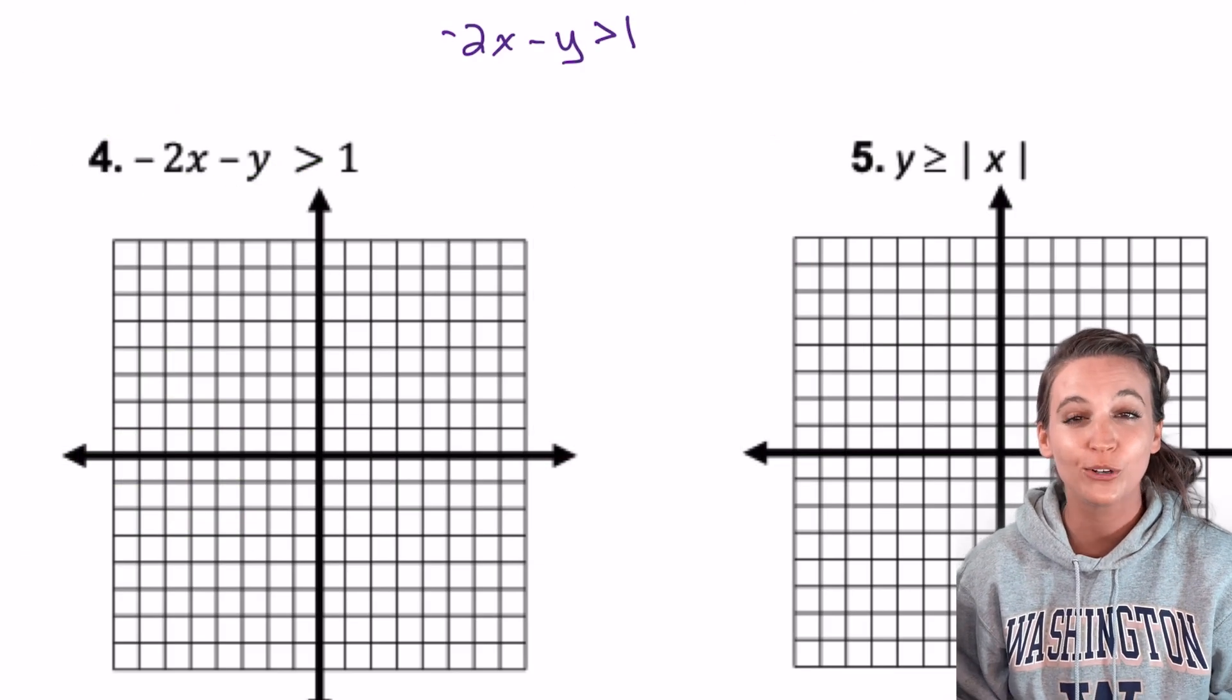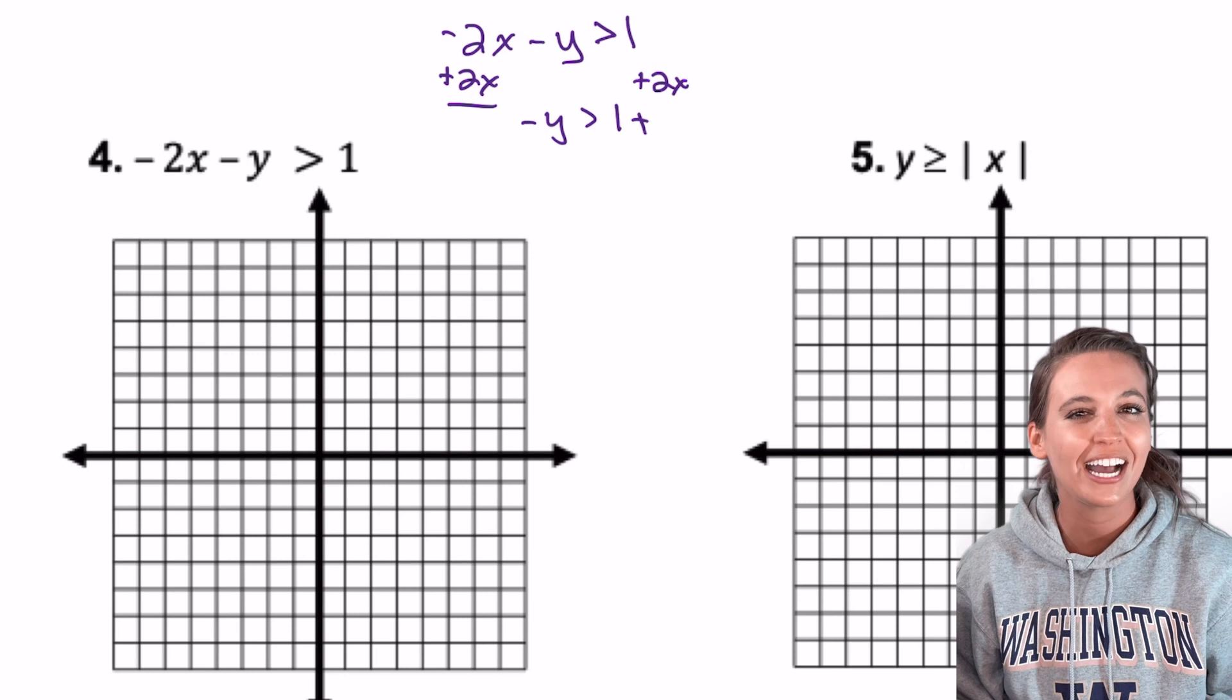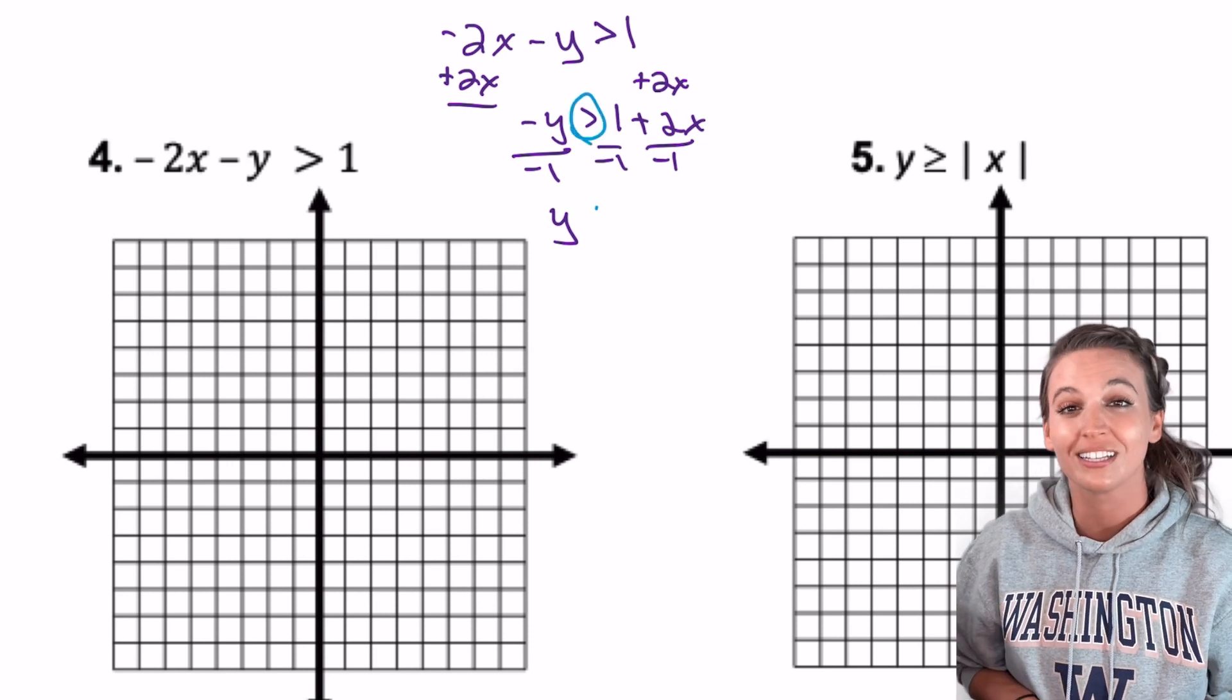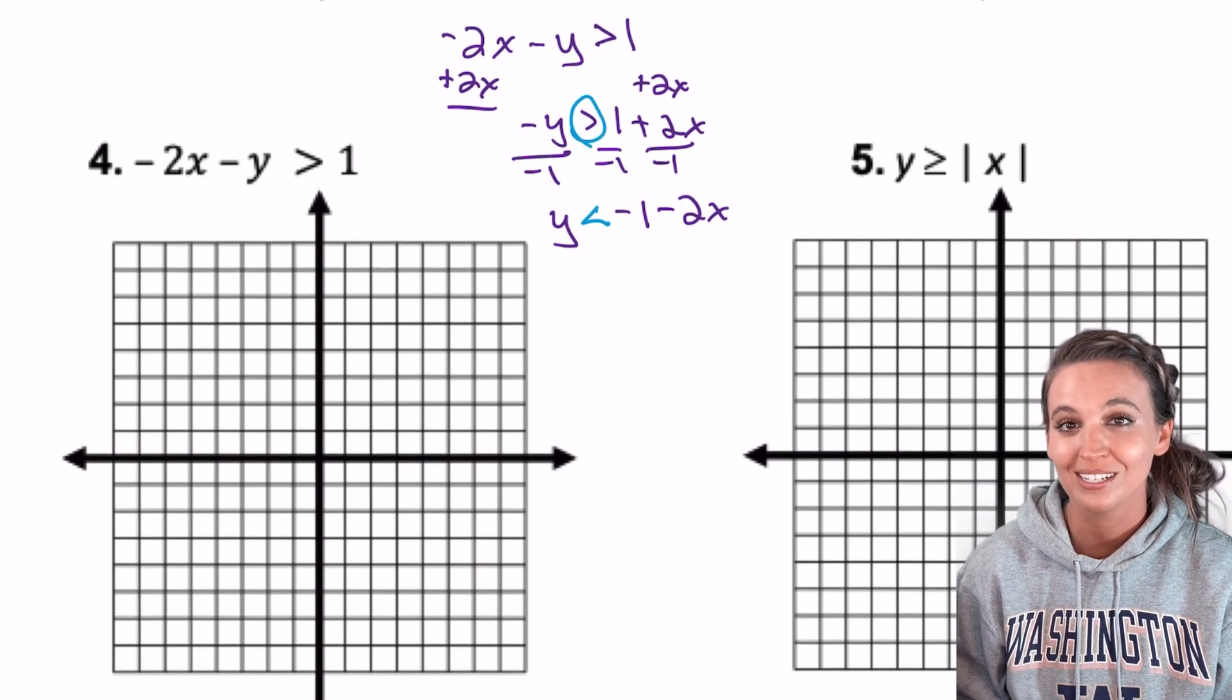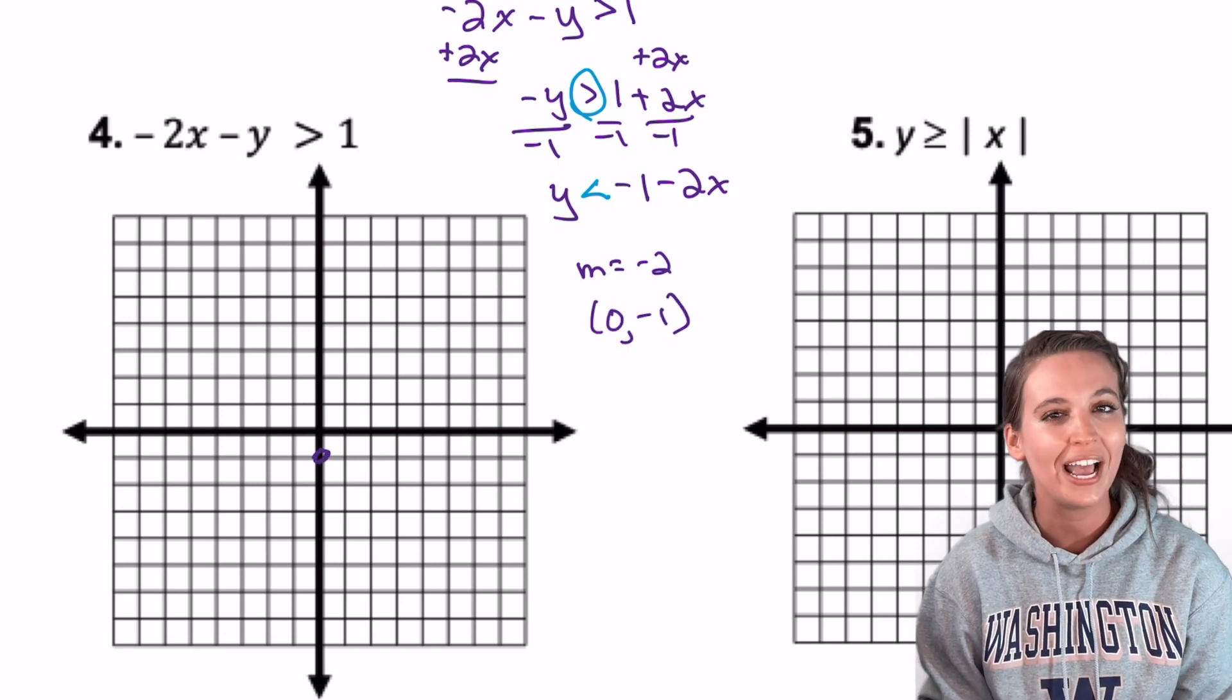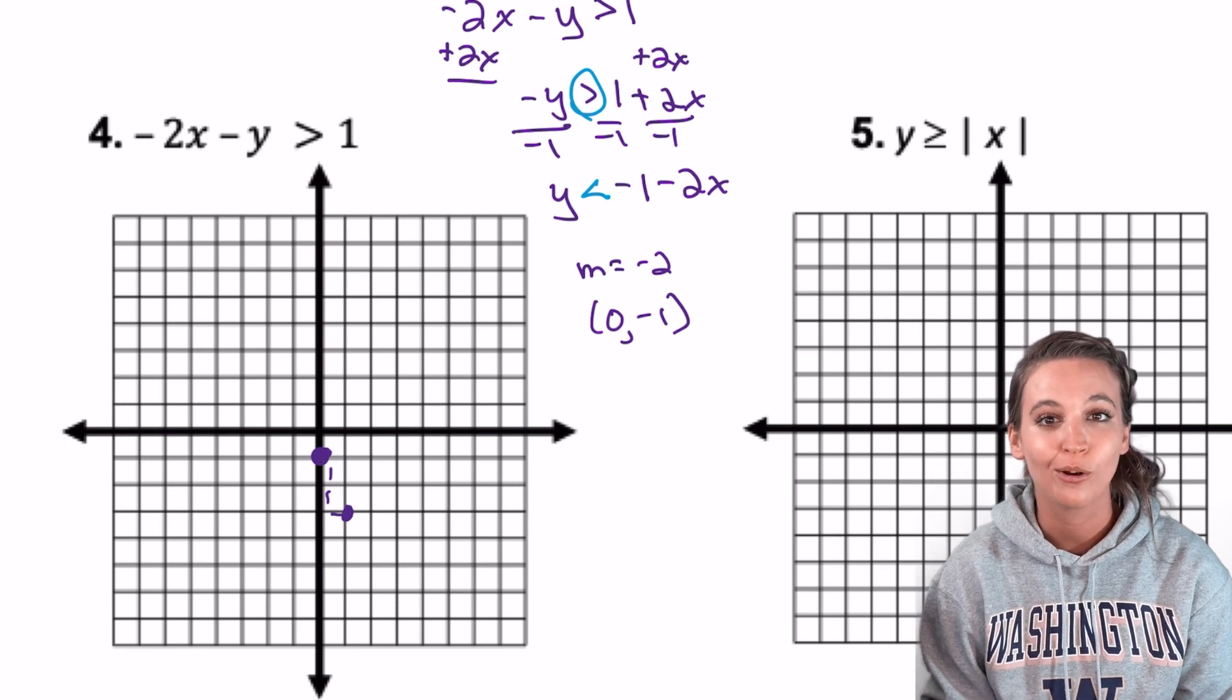Take a look at number four. To graph this line, we first need to solve for y. So I'm going to add 2x to both sides. Then I have a negative y. I need to divide that negative sign off. But when I divide by negative 1, this is an inequality. So I have to flip my greater than sign to a less than sign. This leaves me with y is less than negative 1 minus 2x. What's my slope? Negative 2. What's my y-intercept? 0, negative 1. So let's start on the y-axis at 0, negative 1. Then since my slope is negative 2 over 1, I'm going to rise down 2 and run right 1.